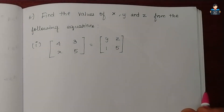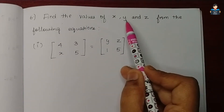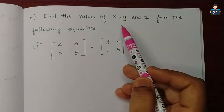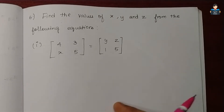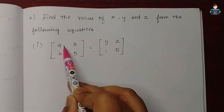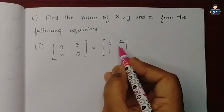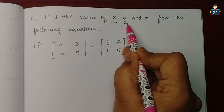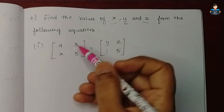Hello everyone, welcome to our channel. In this video we look at Class 12 standard NCERT Maths Chapter 3 Matrices, Exercise 3.1, Question number 6. We need to find the values of x, y and z from the following equations. We have already covered the equality of matrices concept, so we know that when two matrices are equal, their corresponding elements will also be equal.